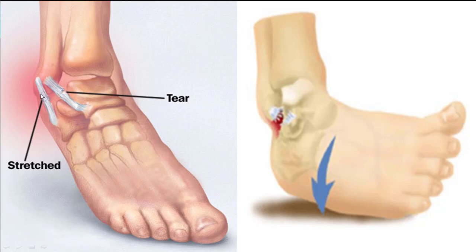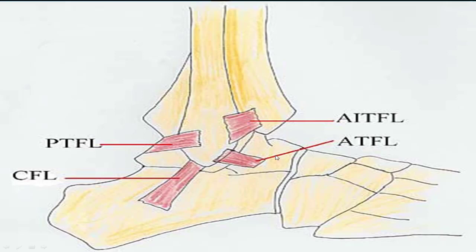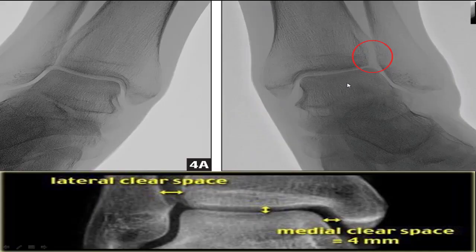A normal inversion ankle sprain is when your foot inverts and you tear the ligaments on the outside of your ankle — not between your leg bones, but on the outside. You can feel right there with your thumb to tell if that's the painful area. A high ankle sprain won't hurt down there; it'll hurt up here. With an inversion ankle sprain you injure the two ligaments that prevent your foot from tilting out of the ankle joint.